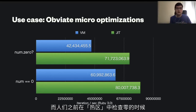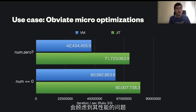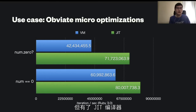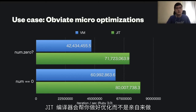Looking at this graph, you can see that JIT compiler (the green graph) for the zero? method is faster than == 0 in the VM. JIT can also optimize == 0, so there's still some difference between zero? and == 0 for both JIT methods. But the gap is much smaller than in VM. At least for hotspots, we can remove such blockers to using zero?, which is specialized for checking zero. With JIT compiler enabled, you don't need to worry about such things and can let the JIT compiler handle optimization instead.